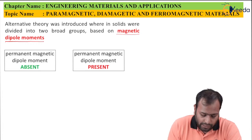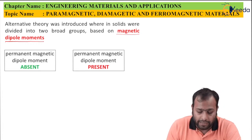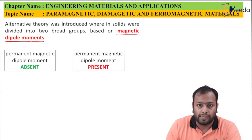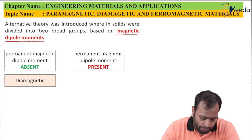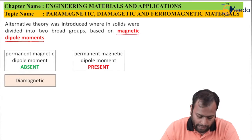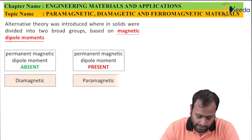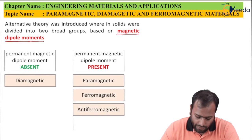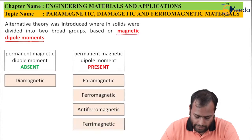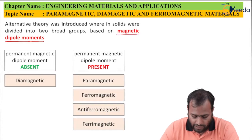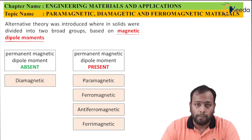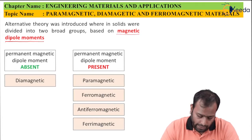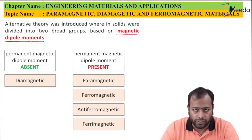In one classification, the permanent magnetic dipole moment is absent, and in the second it is present. If it is absent, it is diamagnetic. If it is present, it is paramagnetic, ferromagnetic, antiferromagnetic, or ferrimagnetic. These are basically the subheadings of the classification.